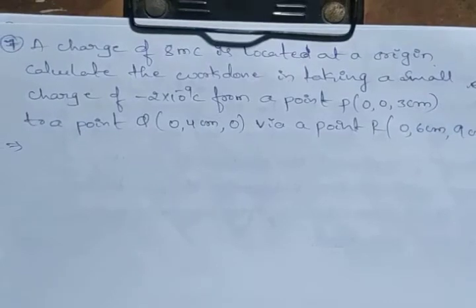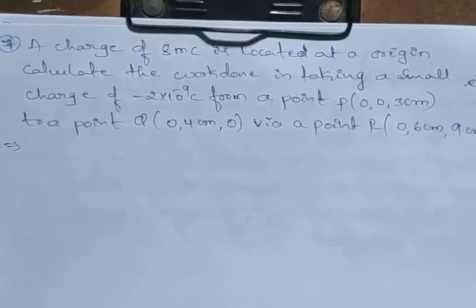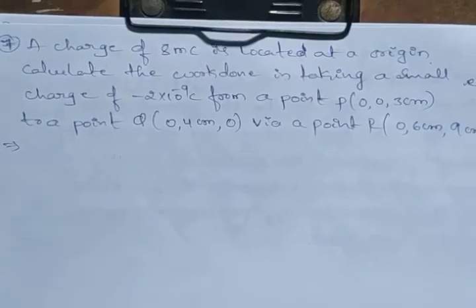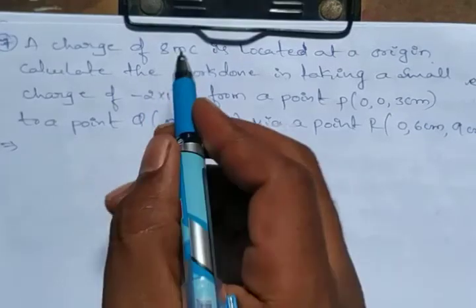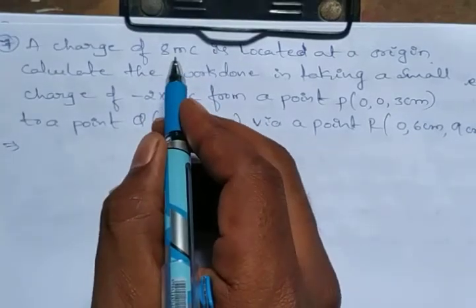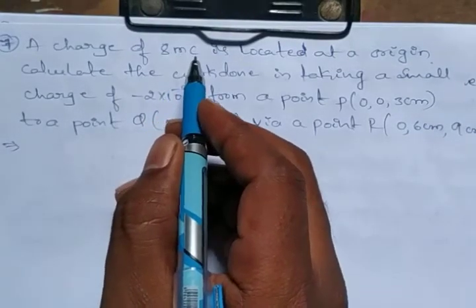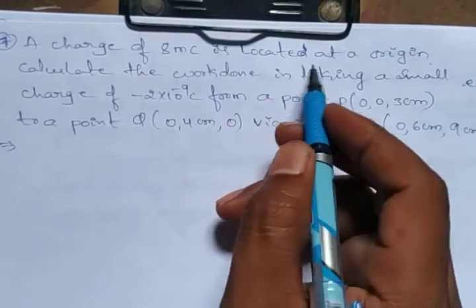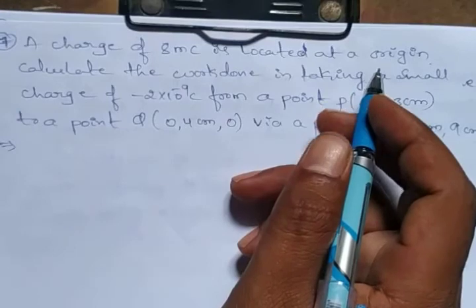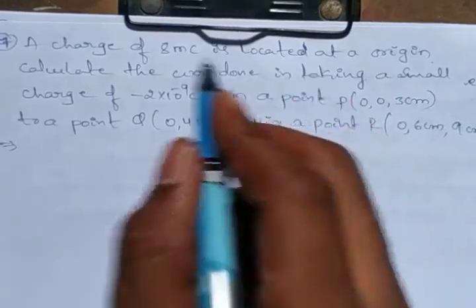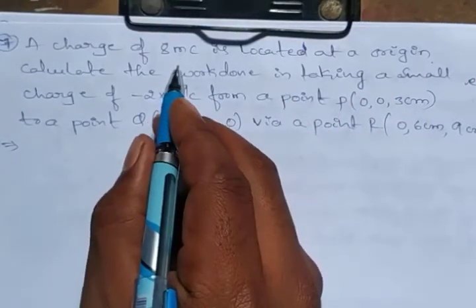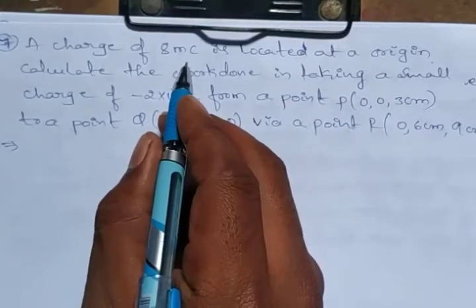See the 7th numerical from Electrostatic Potential and Capacitance. A charge of 8 milliCoulombs is located at the origin.